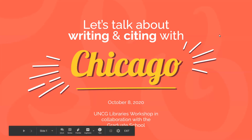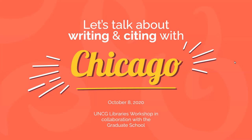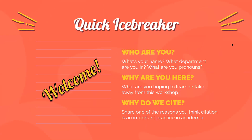Let's get started. Today we're going to go through some hopefully useful information about the Chicago Manual of Style online and different elements of Chicago style. But first, even though there are only two of you here, I'd love to know a little more about you — your name, department, pronouns, what you're hoping to take away from this workshop, and one or two reasons why you think citation is an important practice in academia.